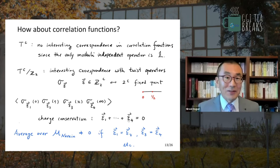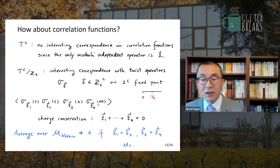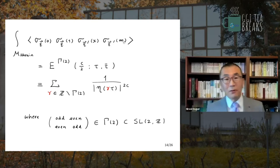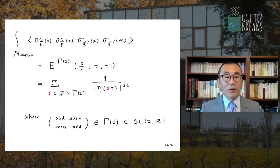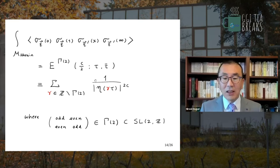We can compute the average of correlation functions. If you average these, they are non-zero only when the fixed points are pairwise identified. You can calculate, for example, the pairwise identified twist operator, giving a four-point function. The four-point function depends on the cross-ratio of the four points, and you can average that over the Narain moduli space. Interestingly, the result of the average is a non-holomorphic Eisenstein series of Γ(2), a congruent subgroup of SL(2,Z) — specifically the sum over Γ(2)/Z of 1/η^(2C). Γ(2) is the subgroup of SL(2,Z) where diagonal elements are odd and off-diagonal elements are even.